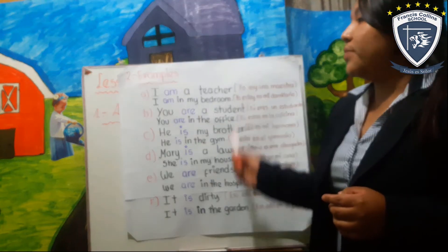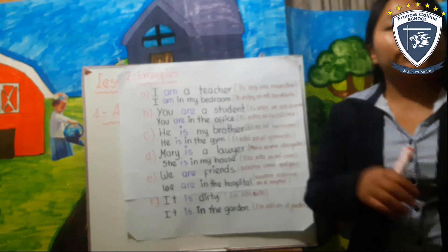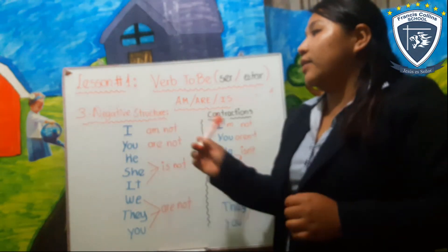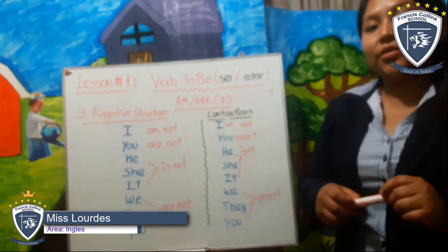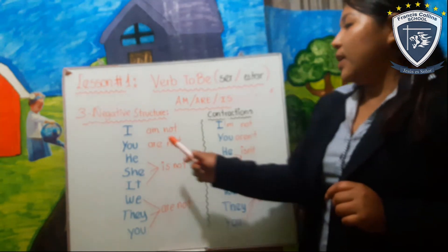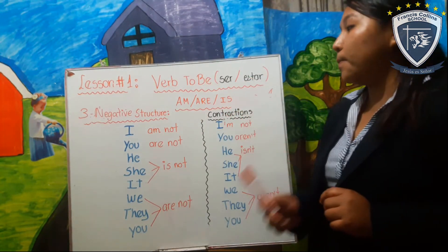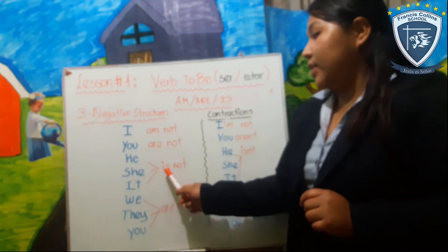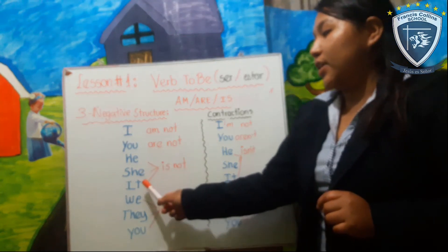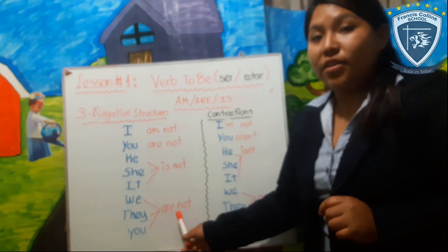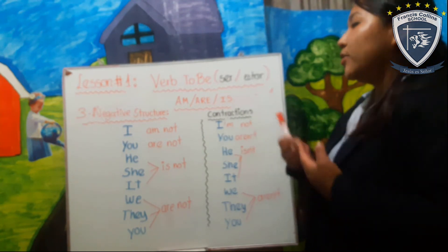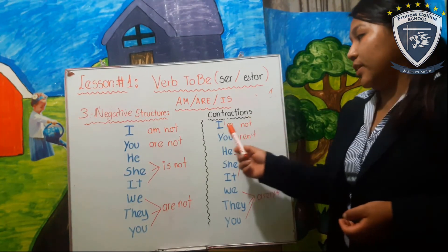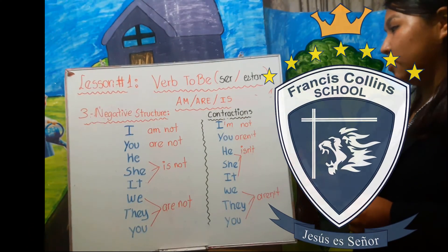This is the examples for the affirmative structure. Now we are going to move to the negative structure. Number three: negative structure. We have our personal pronouns with the verb to be in negative form: I am not, You are not, He is not, She is not, It is not, We are not. Ahora, ¿cuál es la contracción de esta forma? El I am not siempre su contracción va a ser I'm not. No hay otra forma de contracción.